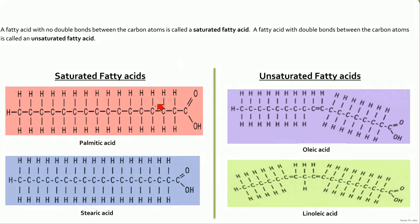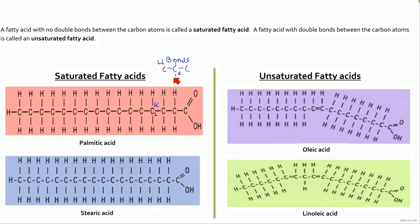What that means is that every carbon has four bonds attached to it. So this carbon here — if I just label it number one — it's attached to another carbon, to two hydrogens, and then to another carbon, giving it four bonds. There's a carbon-carbon bond, so this is carbon-1, and attached to that are two hydrogens. Around carbon-1 we've got four bonds: two linked to a hydrogen and the other two linking to more carbons.